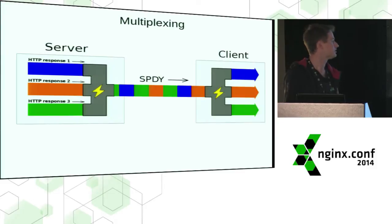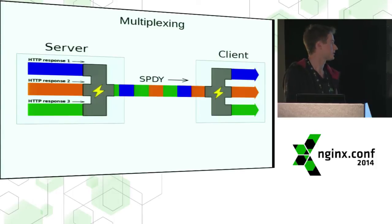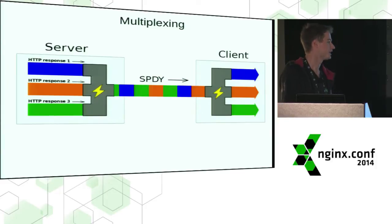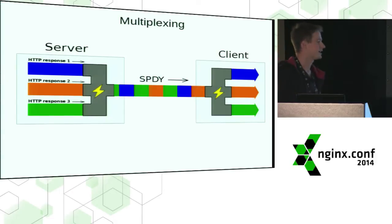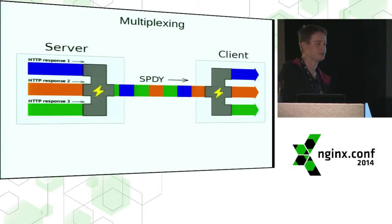The main benefit from SPDY is from multiplexing. It separates multiple requests into chunks, and each chunk of requests has its own headers that specify which request this data is intended for. It's like HTTP chunked encoding, but HTTP chunks only have size in headers, whereas SPDY chunks have size and request IDs.